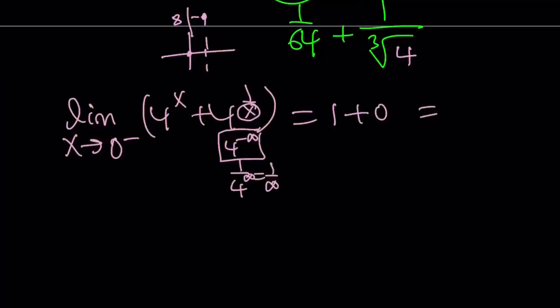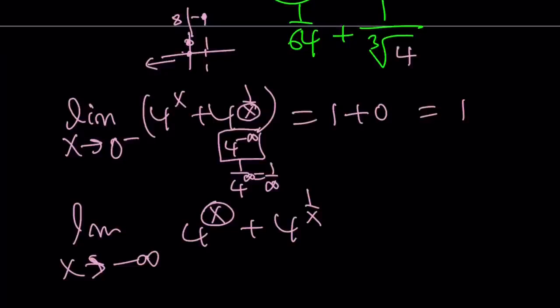In other words, this limit is just going to be 1. So as x approaches 0 from the left, our y value is going to approach 1. Okay, something like this. You're going to have an open dot at 0. What happens if x approaches negative infinity? Let's go ahead and take a look at that limit now real quick, and we're going to conclude with the graph. If x approaches negative infinity, this is going to approach 4 to the power negative infinity, which is 1 over 4 to the power infinity, which is 0. And this is going to approach 1 over infinity, 4 to the power 0, which is 1. So the limit is going to 1 again.